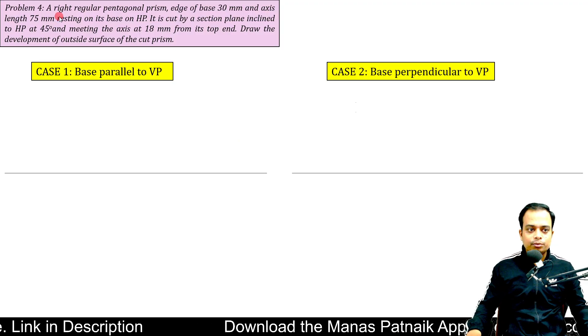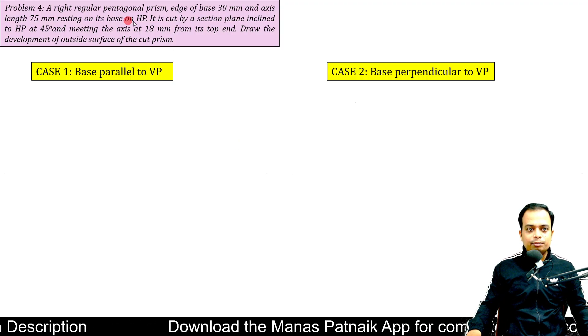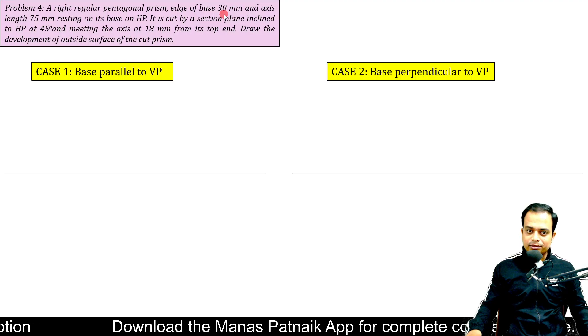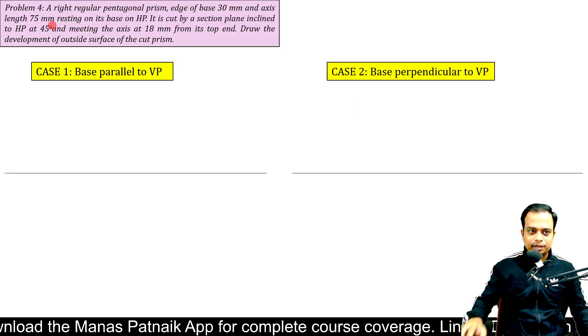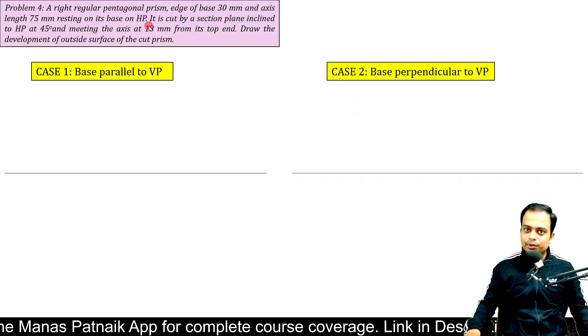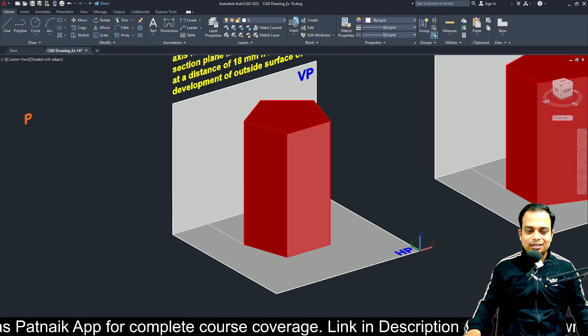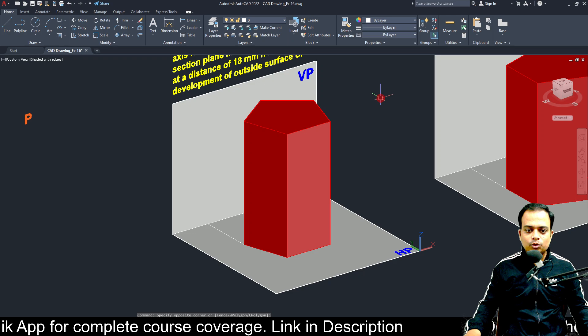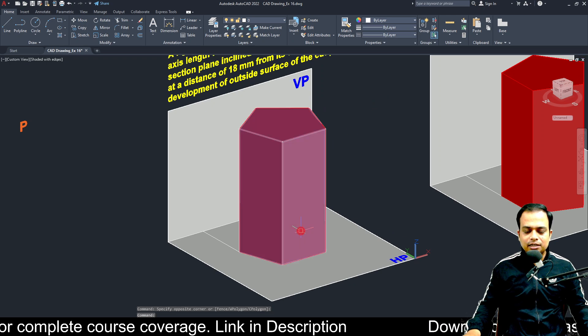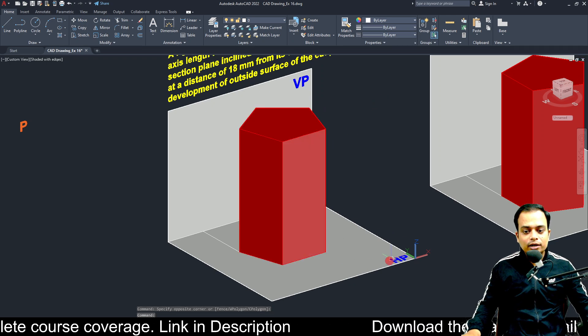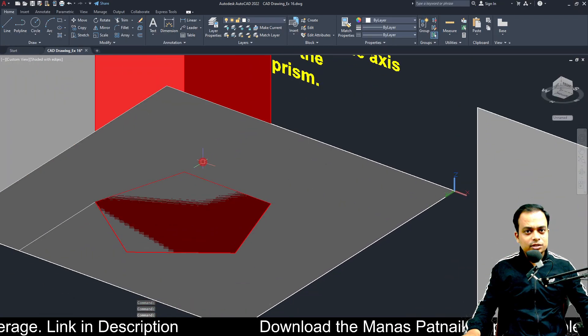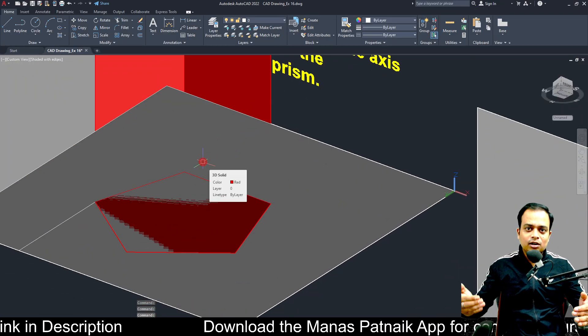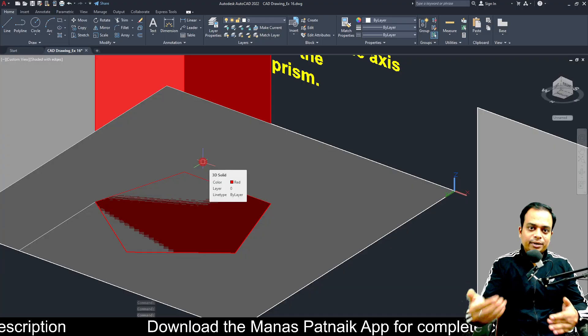Let me just read the problem for you. A right pentagonal prism, edge of the base is 30, axis length is 75. Are you able to visualize this? Let me help you. Resting on its base on HP. So, this is the pentagonal prism. If you look carefully, it is resting on its base on this HP, horizontal plane. The base has to be pentagonal in shape.